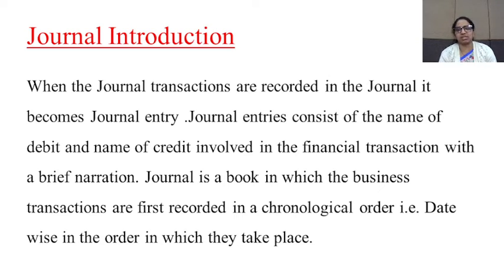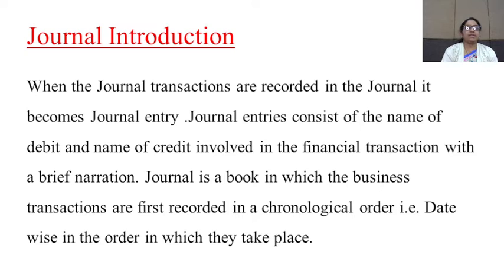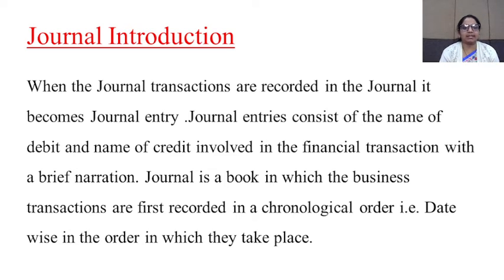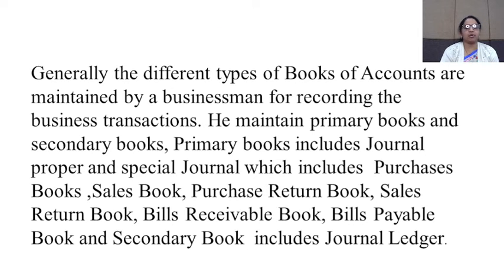As we saw in the analysis of transactions, every transaction has two aspects — two accounts involved — one is the debit and another is the credit. Journal entries always consist of the debit as well as the credit with a brief narration. Journal is a book in which business transactions are first recorded in chronological order, that is date-wise in the order in which they take place — sequence-wise one below another.